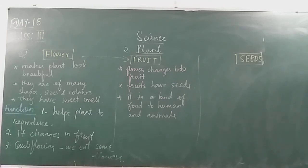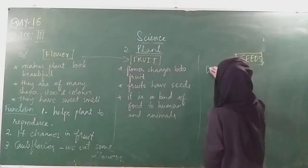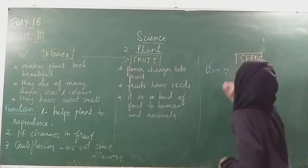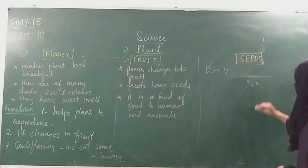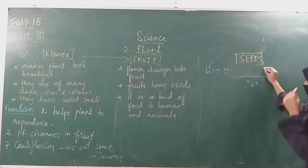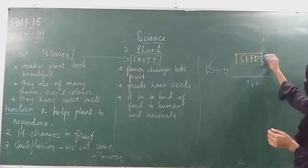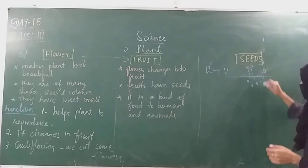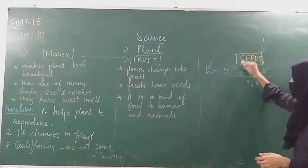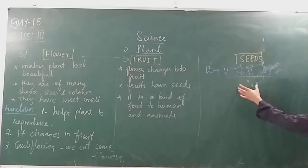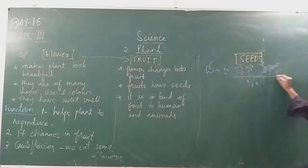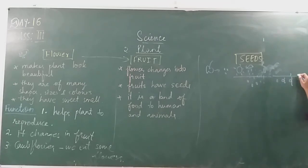The last topic is seeds. Seeds help in growing a new plant. We get seeds from fruits. When we sow seeds in the ground and give them water, and with sunlight and air — the same conditions as photosynthesis — these seeds will grow. From a small seed, a root will come out, and then the seed will grow into a new plant.